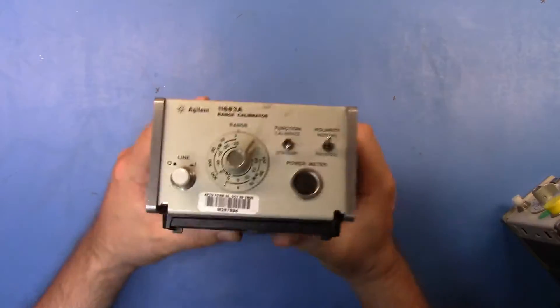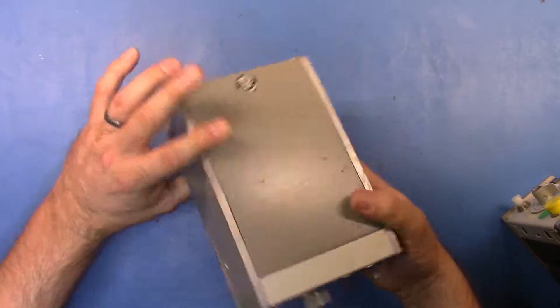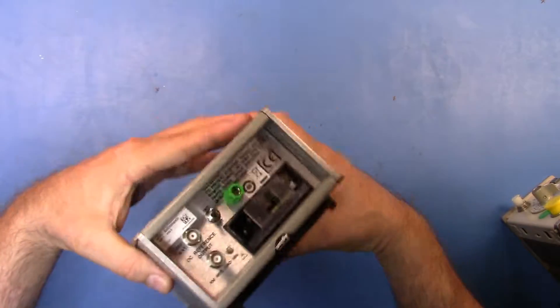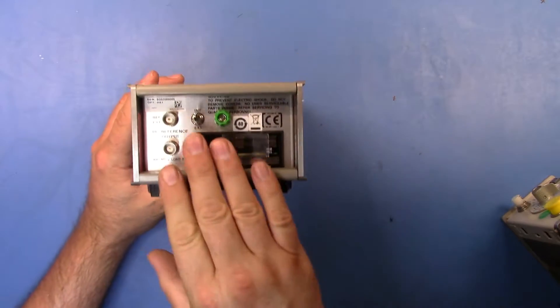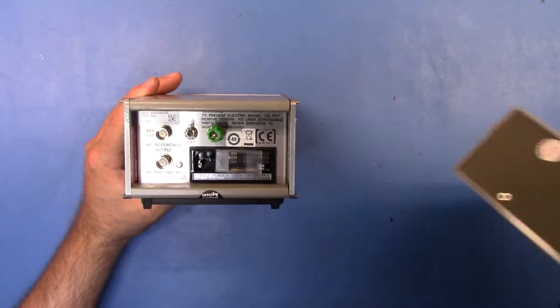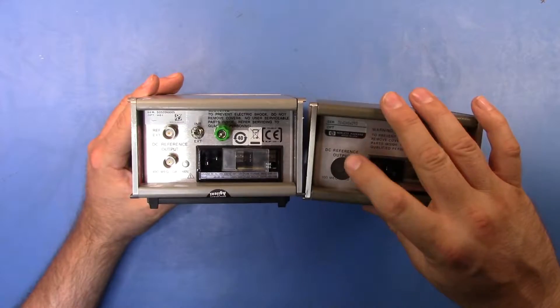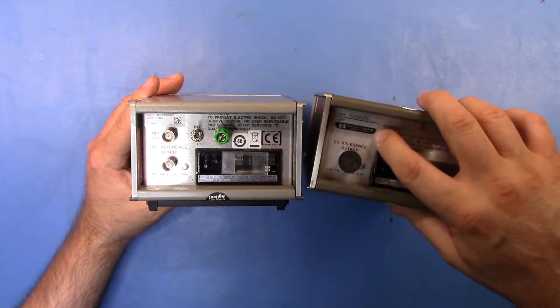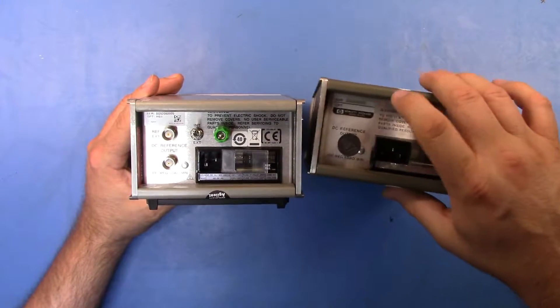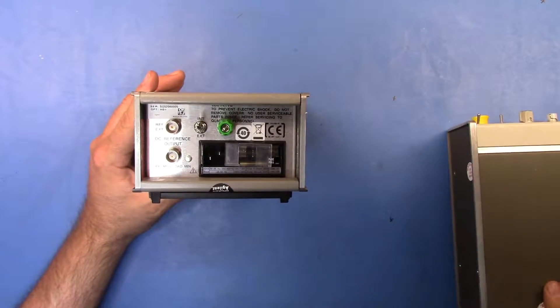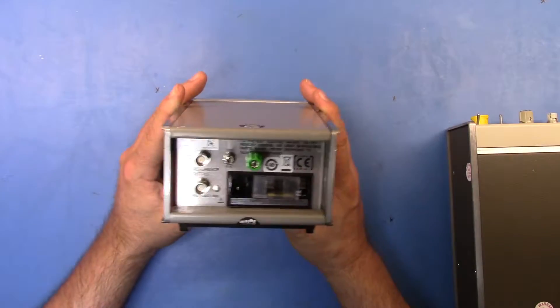But it's fundamentally the exact same calibrator. So why did I invest in buying this calibrator from the Department of Defense? Well the reason is on the back here. If we have a look at the back here, all we have is the DC reference out and we don't have any other componentry, but this guy here is the 11683 with option H01.